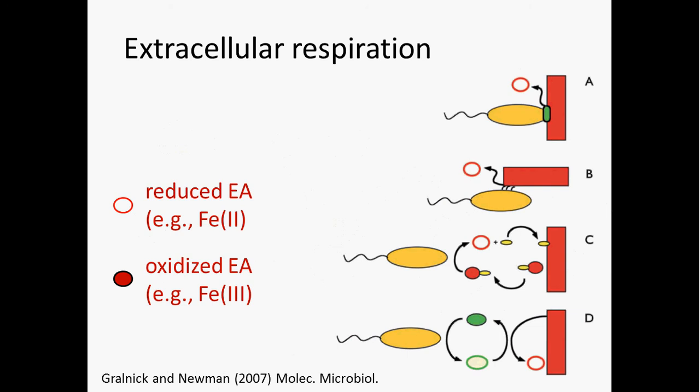Because iron reducers use a solid iron oxide or oxyhydroxide, they are forced to rely on extracellular respiration. The extent to which they can access the surface depends on reactive surface area — we need to take that into account when talking about the kinetics of electron acceptance for iron reducers. So what are some things that influence reactive surface area of iron oxides and oxyhydroxides?